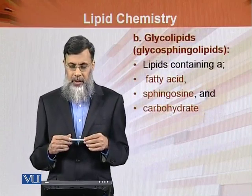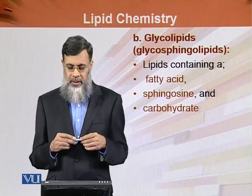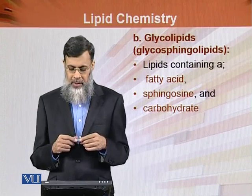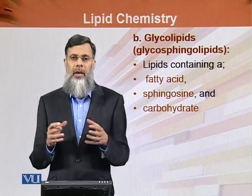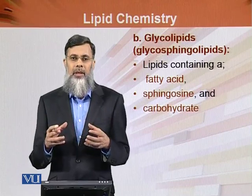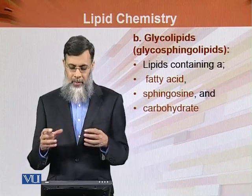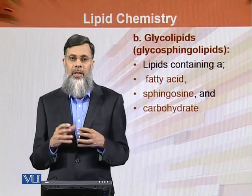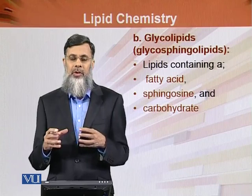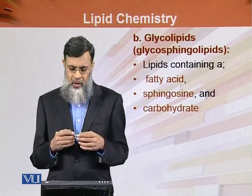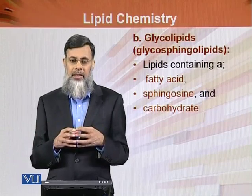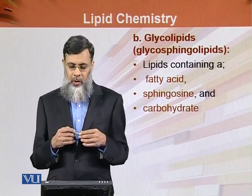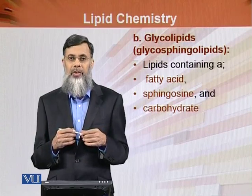The second subclass of complex lipids is glycolipids, also called glycosphingolipids. These are lipids containing a fatty acid and particularly sphingosine. If sphingosine is present along with phosphorus, these are sphingophospholipids. If fatty acids and sphingosine combine and a carbohydrate is also added, these are called glycolipids or glycosphingolipids.